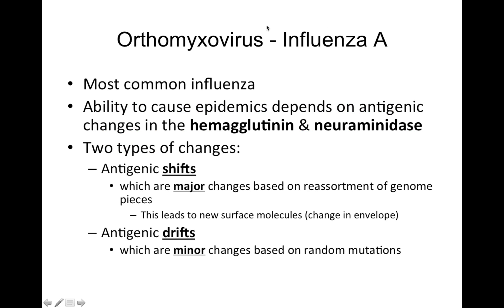We're going to focus most of our attention on influenza A because it's the most common influenza and it's the one tested on the most. The ability of influenza A to cause epidemics depends on antigenic changes in a specific part of the virus called hemagglutinin and neuraminidase. These are two separate surface proteins on the virus. You have to become pretty familiar with two words you'll see come up a lot: antigenic shift and antigenic drift.